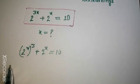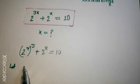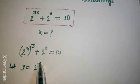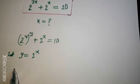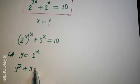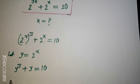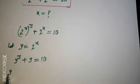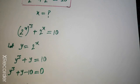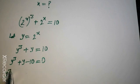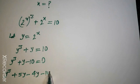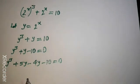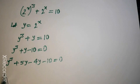We can let 2x equal to y, so we will have y cubed plus y equal to 10. Now we can write this as y cubed plus y minus 10 equal to 0. Then we will split: y cubed plus 5y minus 4y minus 10.